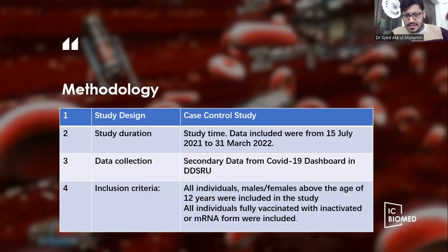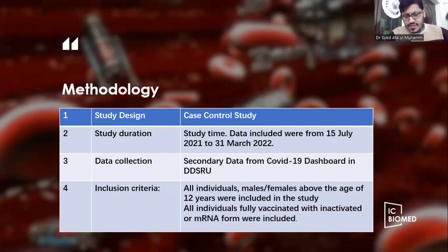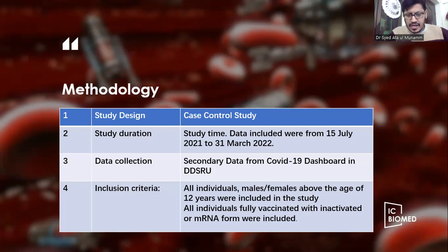The study design was a case-control study, in which cases were labeled as PCR positive for COVID-19 and controls were individuals with negative PCR results. The duration of the study was almost nine months, starting from 15th July 2021 and ending at 31st March 2022.